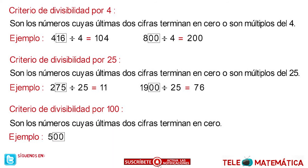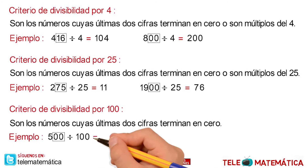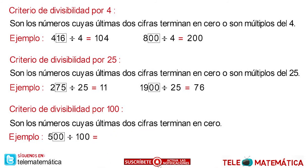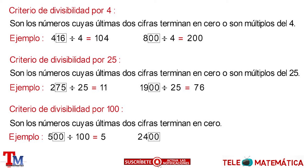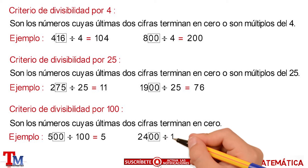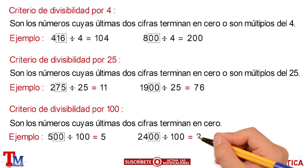Then, to verify, we divide this number by 100 and we get as a result 5. And as a last example we have the number 2400, whose last two numbers are zero. Then checking, we divide this number by 100 and we get as a result 24.